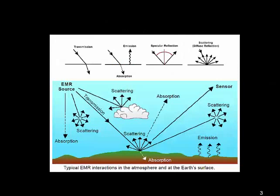The reason for this is that the EM radiation is interacting with the atmosphere, and it's subject to a number of phenomena such as transmission, absorption, emission, specular reflection, and scattering. These all happen through interaction with particles of the atmosphere itself, such as ozone and oxygen, or water molecules suspended in the atmosphere, pollution, or other dust particles.